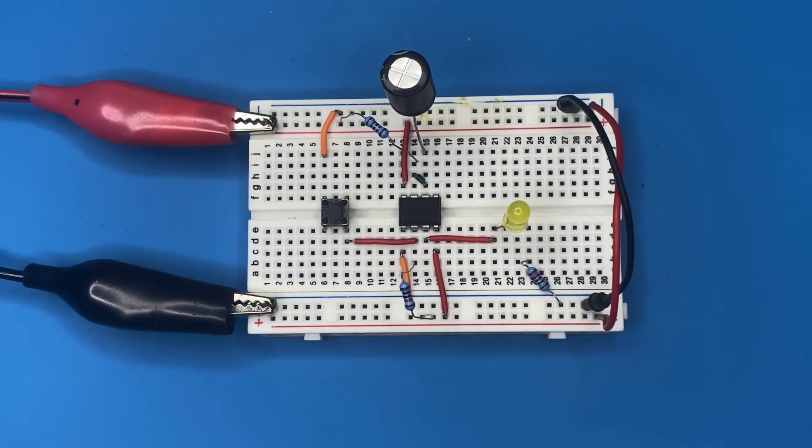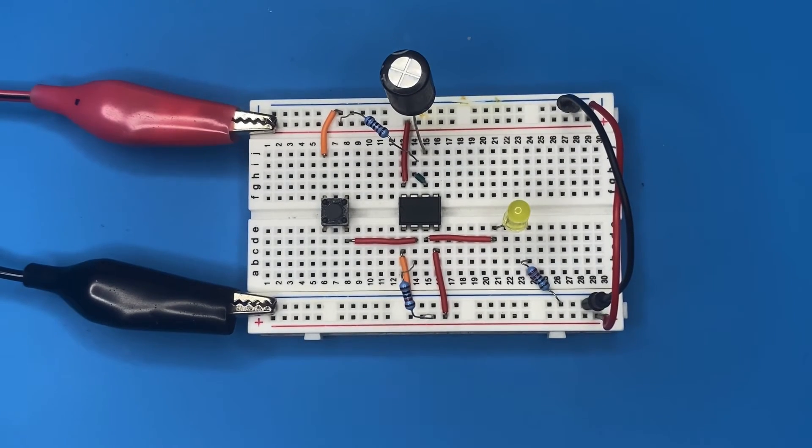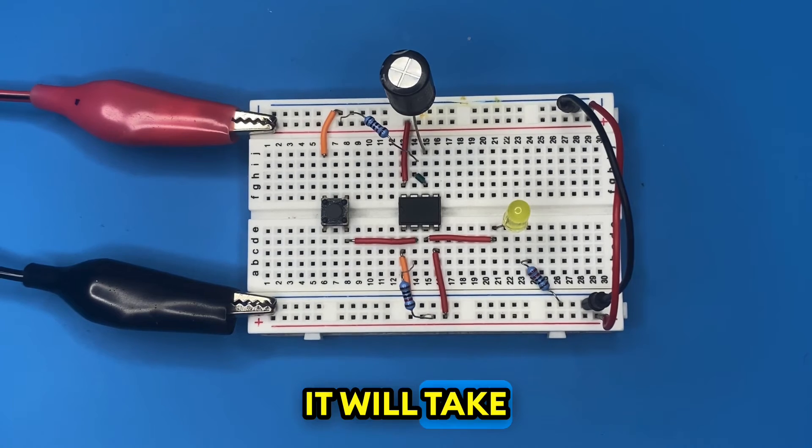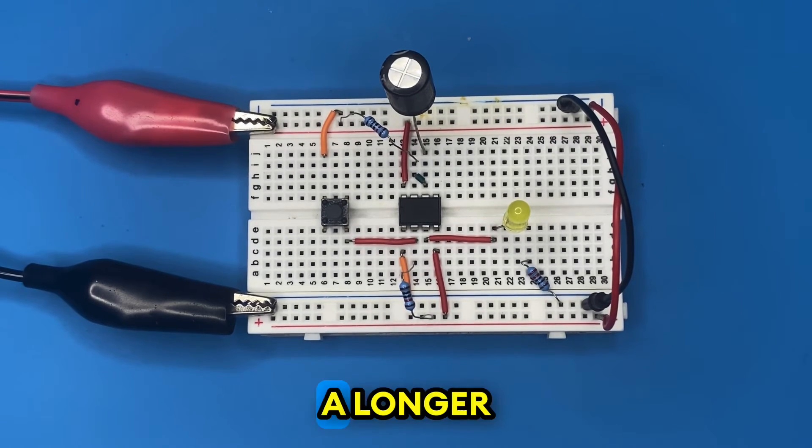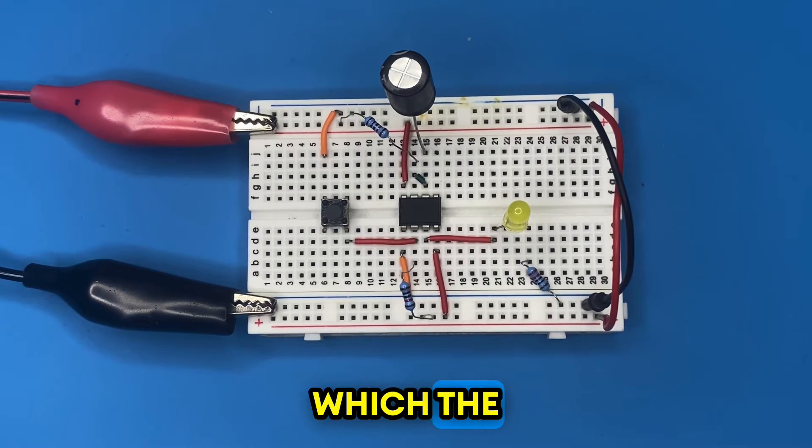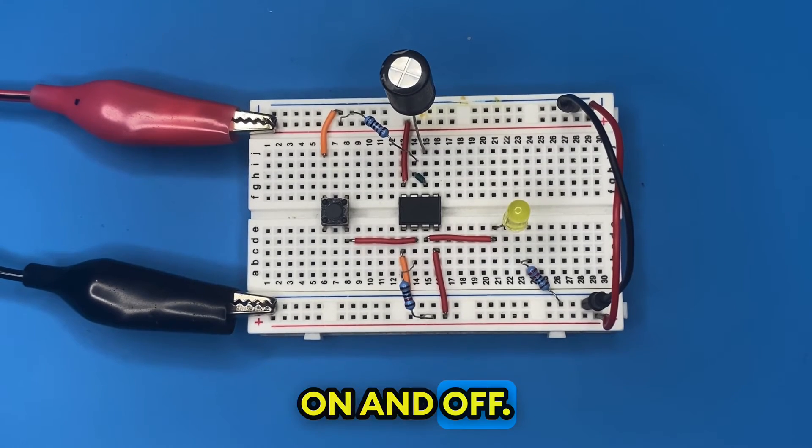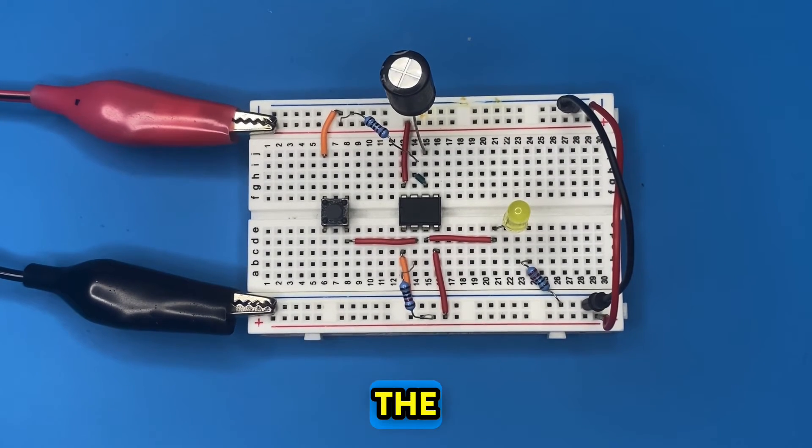As we have expected, if we connect a larger capacitor, it will take longer to charge and discharge, resulting in a longer duration for which the LED remains on and off. Basically, increasing the capacitance increases the time constant of the RC circuit formed by the capacitor and the resistor.